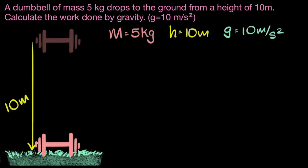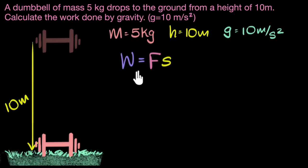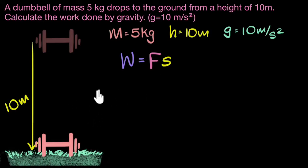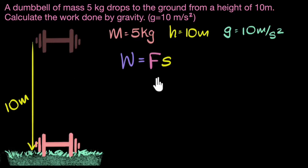From this, how do we calculate work done? We have seen from previous videos that work done by a force on any object equals the force multiplied by the displacement of that object. In our example, the object is the dumbbell, and the force we are asked to calculate is the force of gravity. So we multiply the force of gravity on the dumbbell with its displacement to get the work done.